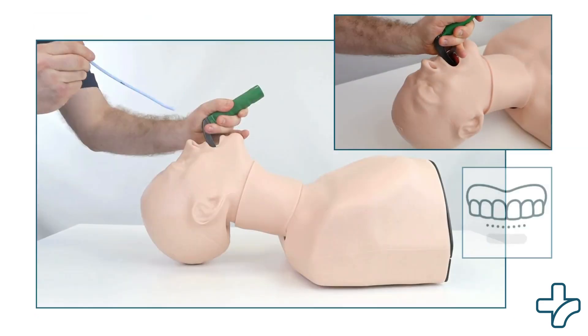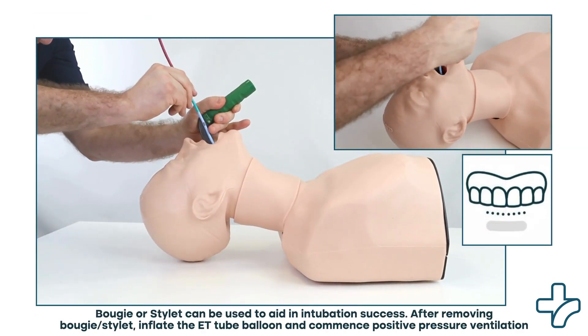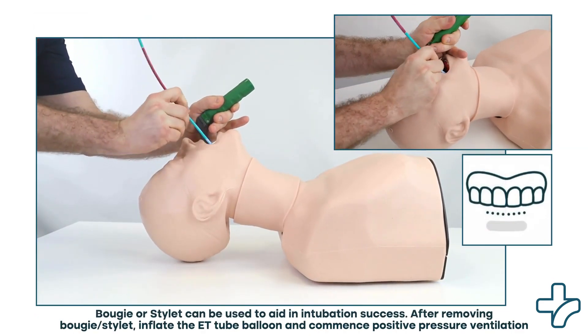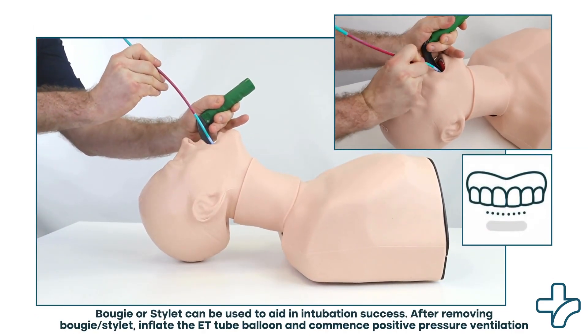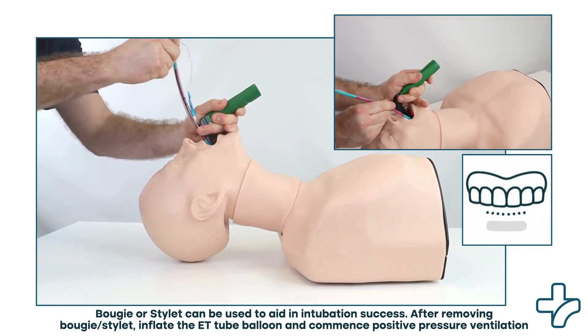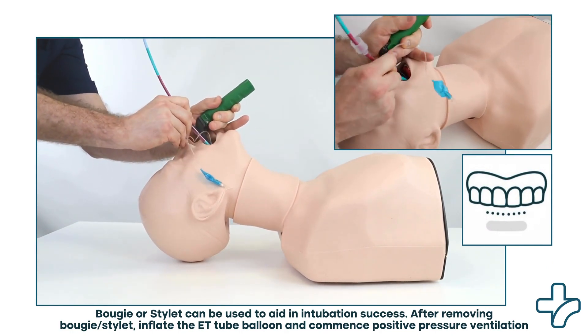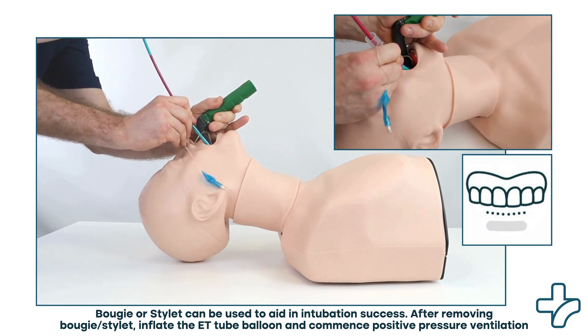A bougie can be inserted through the cords initially before railroading the ET tube. Alternatively, a semi-rigid stylet can be inserted into the ET tube to make it more maneuverable.